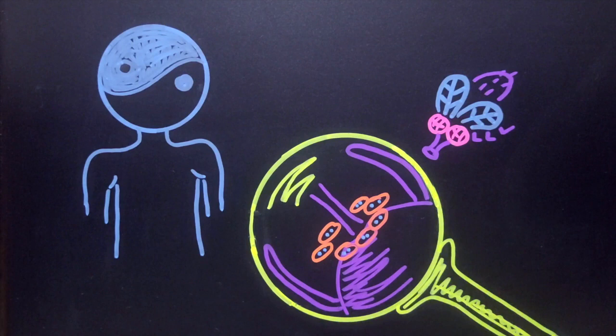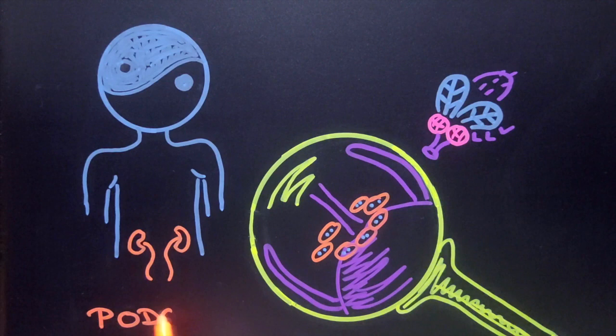Nephrocytes are similar to the podocytes in our kidney. By intensive endocytosis, they remove unnecessary metabolites and harmful toxins from the circulation.